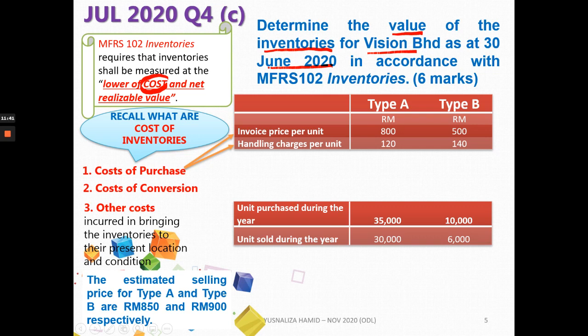Other costs incurred include whatever costs you may have to incur to bring the inventories to their present location and condition — for example, the cost of transporting inventories, such as freight costs from the place of import to the destination. You need to consider terms like free-on-board shipping. Be careful that some costs are excluded from the cost of inventories — check the exclusions in MFRS 102 and your notes.